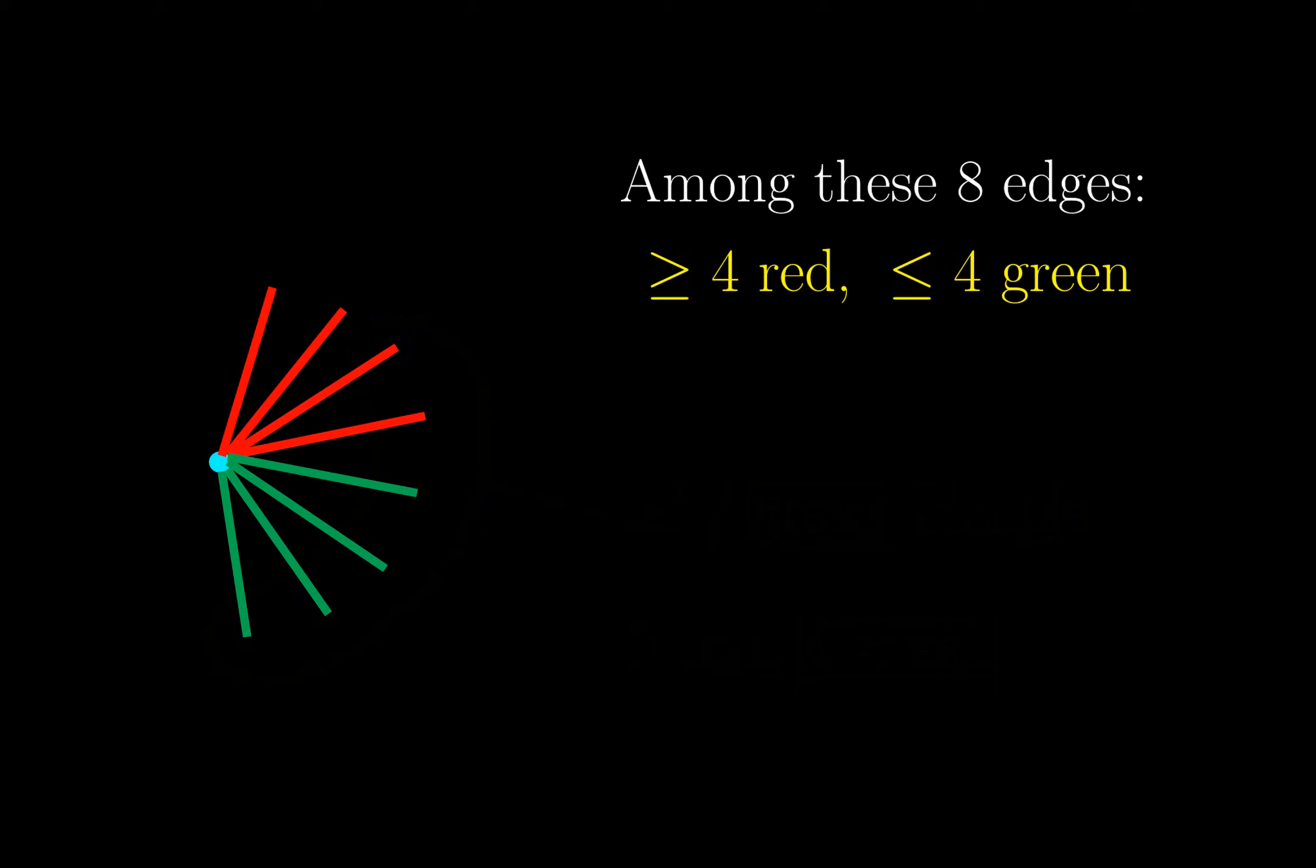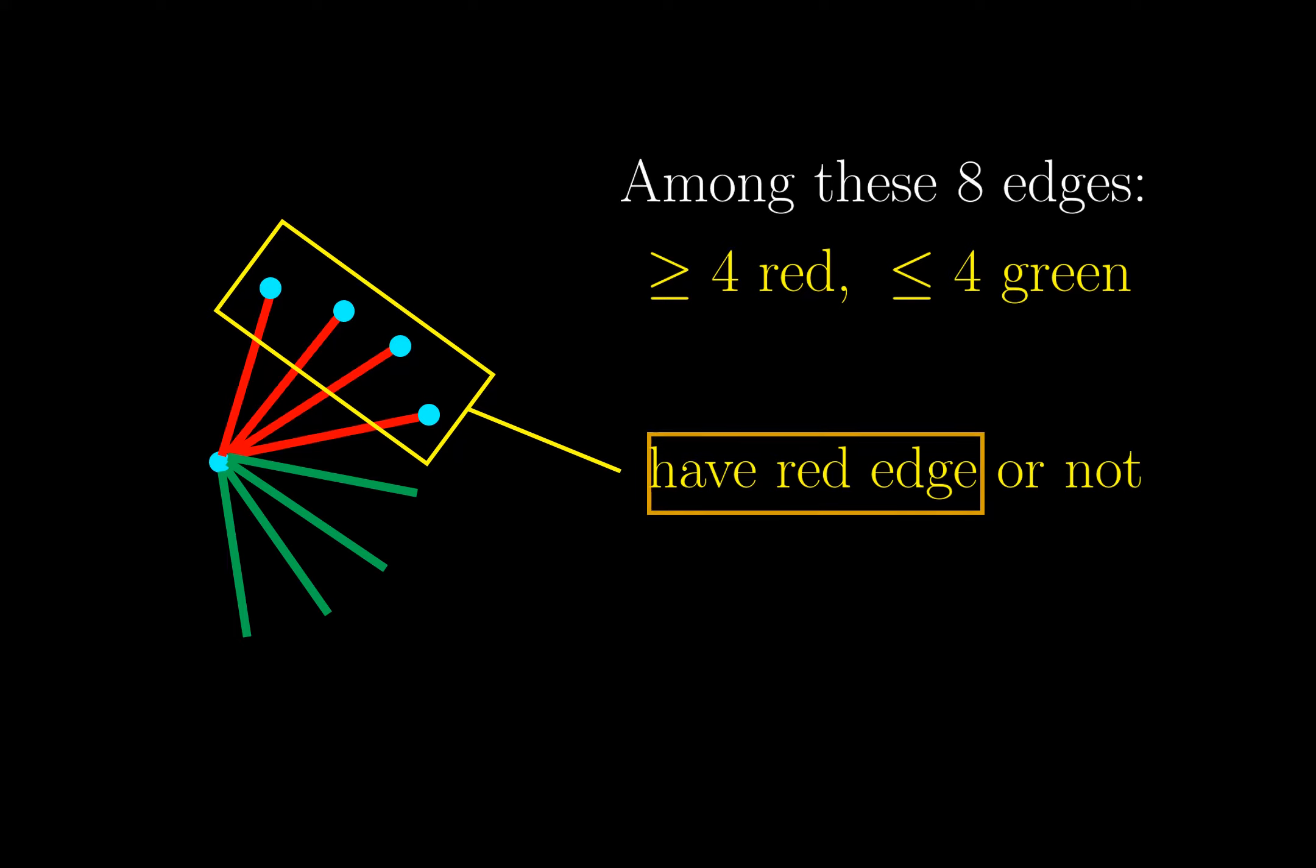In another case where there are 4 or more red edges, and 4 or less green edges, then among these 4 vertices, there is either a red edge, or not. If there is a red edge, then there is a red triangle, so there is a group of 3 vertices all connected in red. If not, then all the connections are green, and so there are 4 vertices all connected in green. So in this case, we are also done.